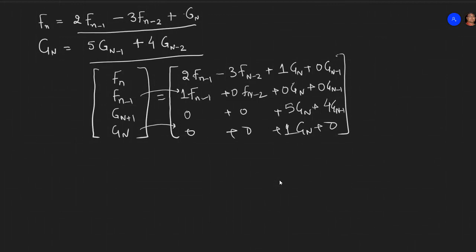The first matrix comes out to be 2, minus 3, 1 and 0. Then it comes out to be 1, 0, 0, 0. Then 0, 0, 0, 1, 5, 4. And next one will be 0, 0, 1, 0.